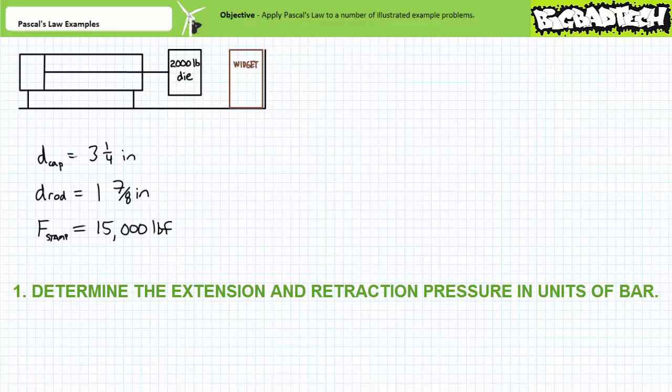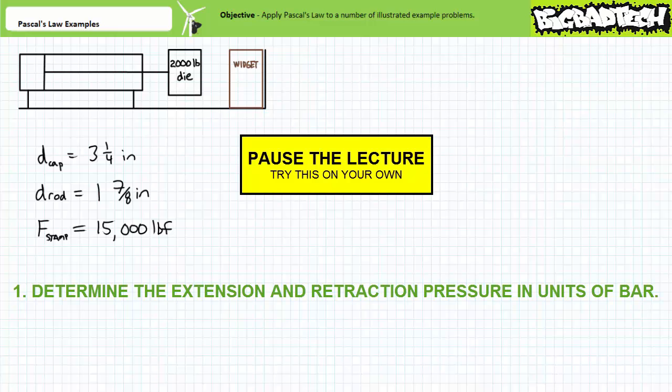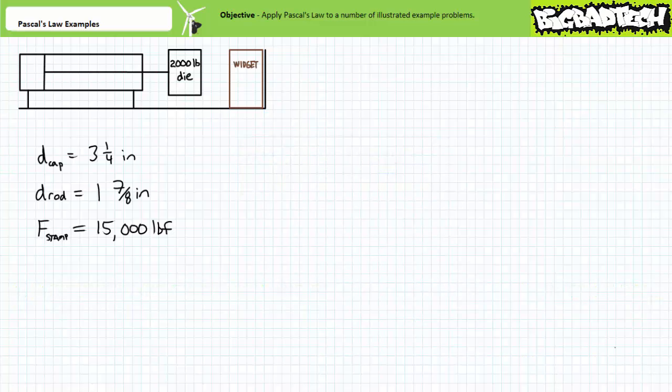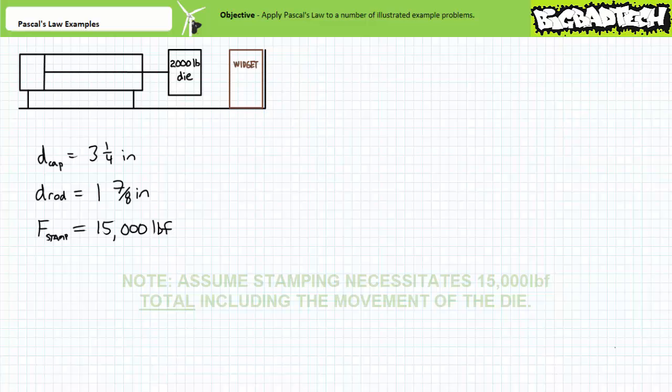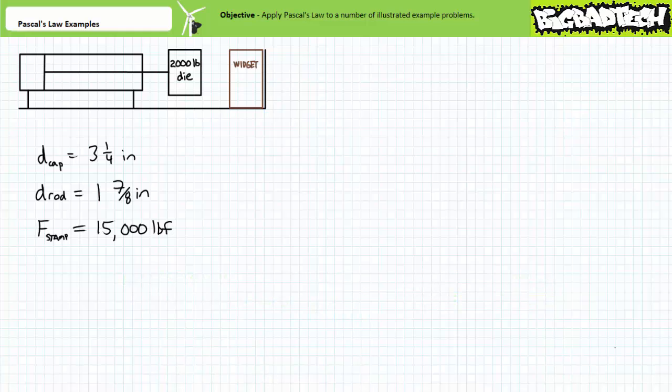By all means, pause the lecture and take your best shot. The diagram suggests that extending the cylinder accomplishes the act of stamping the phrase on the side of the widget necessitates the exertion of 15,000 pounds of force. Similarly, the diagram suggests that retracting the cylinder repositions the 2,000 pound die. The cylinder must therefore retract with a minimum of 2,000 pounds of force.